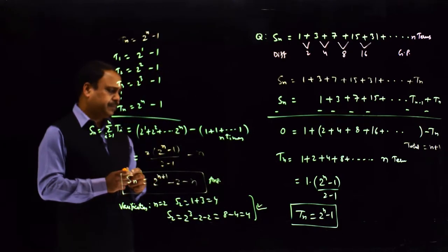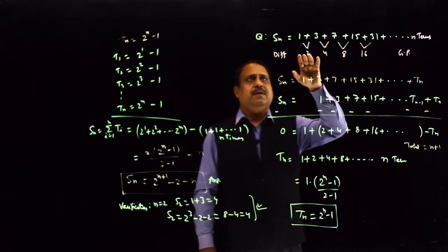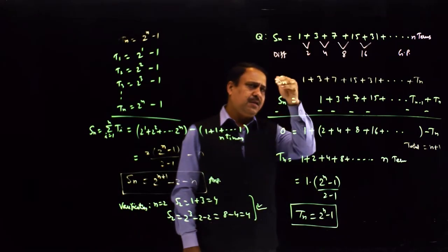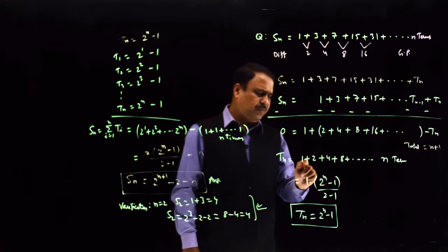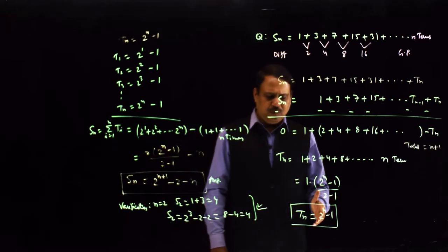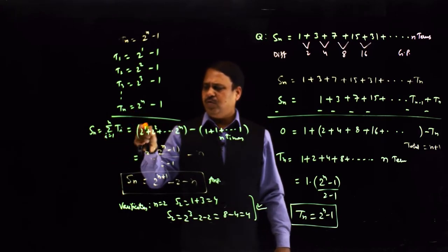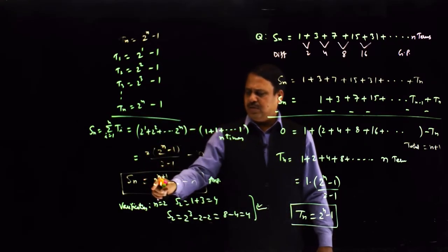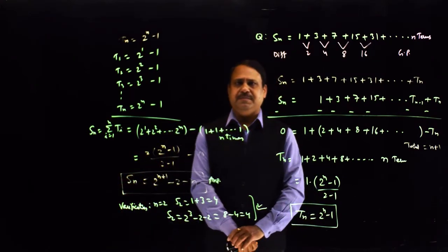This is the last step — verification. To summarize: when differences are in GP, the method is to write Sₙ as it is, repeat it one place shifted so total terms become n plus 1, subtract to get one term sent to the other side leaving n terms. Check whether the remaining terms form a GP — in this case yes — apply the sum formula to get Tₙ equals 2ⁿ minus 1. Then put n equals 1, 2, 3, 4 and add vertically to get Sₙ equals 2ⁿ⁺¹ minus 2 minus n. Thank you.